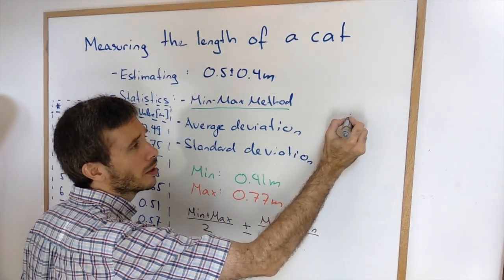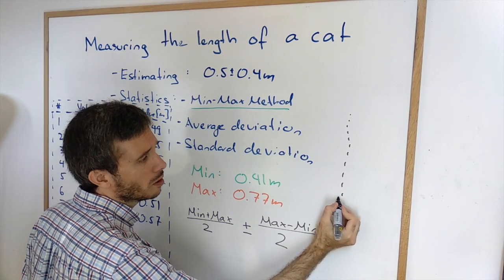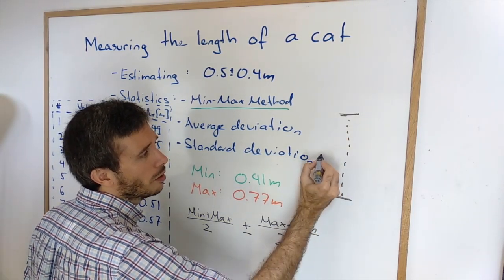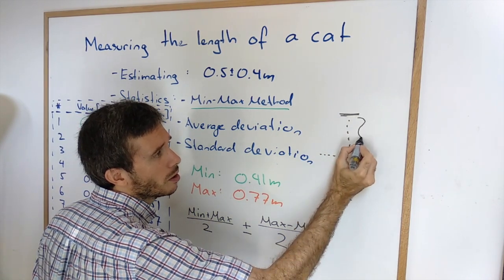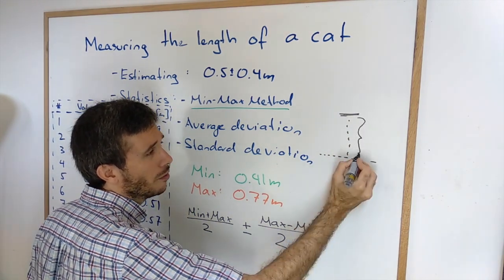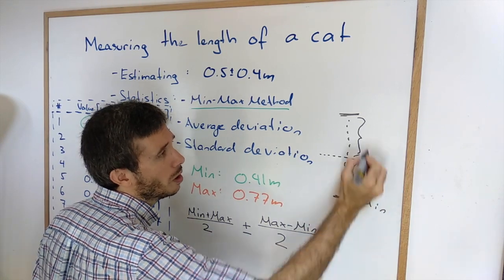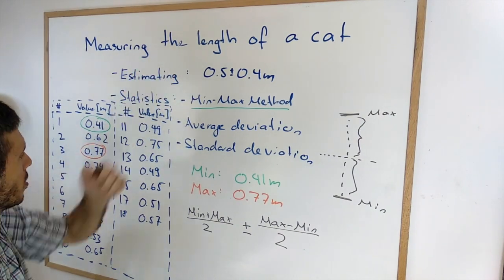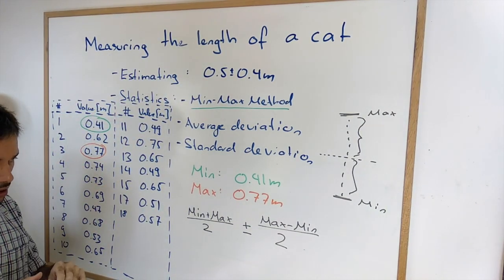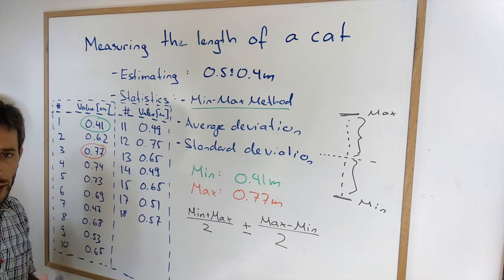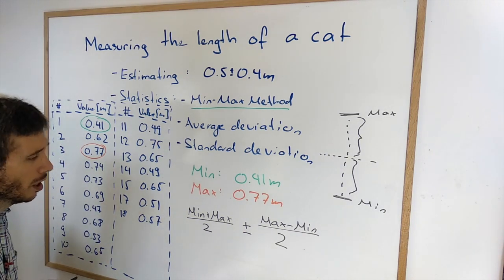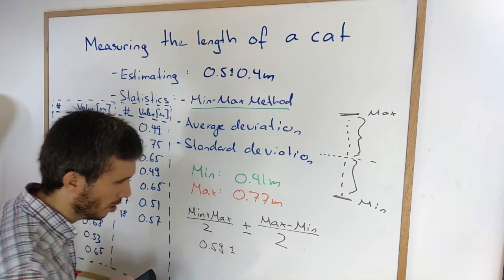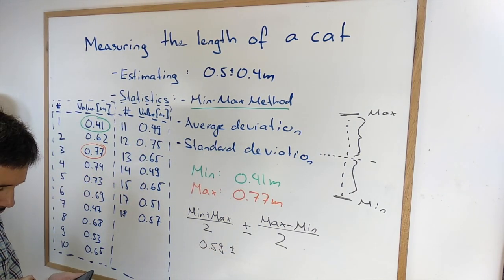If you think about it, if you have several values, what we do is we say okay this is the minimum value, this is the maximum value. Our value we report is this with an uncertainty of exactly half the range between the minimum and the maximum, so our answer will include every single number here inside. So let's calculate: gives me 0.59 plus minus, now max minus min, 0.77 minus 0.41 divided by 2 gives me 0.18 meters.